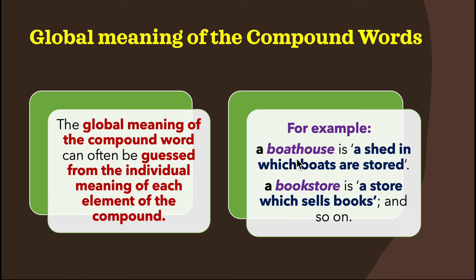Blending is the process whereby new words are formed by combining parts of two words, usually the beginning of one word and the end of another. Examples of blending: smoke + fog — take the beginning of smoke and the end of fog — gives smog.